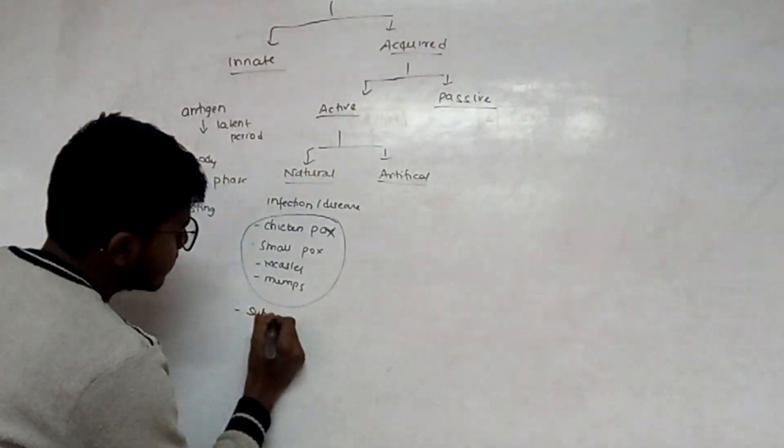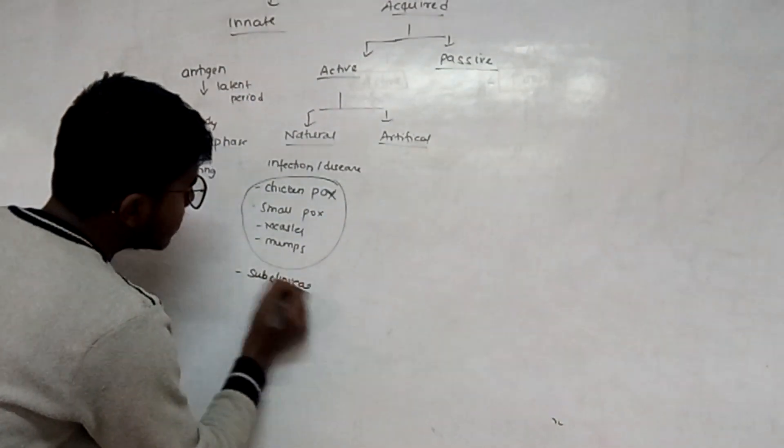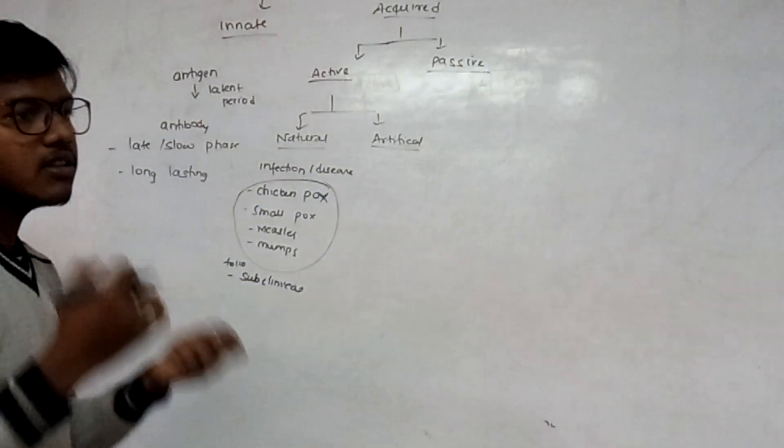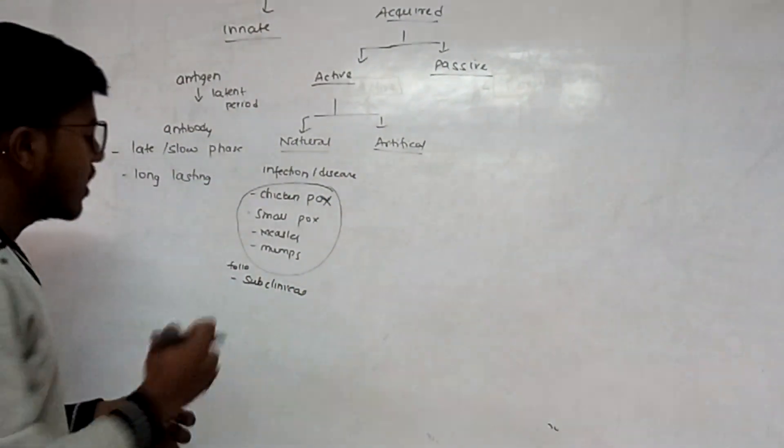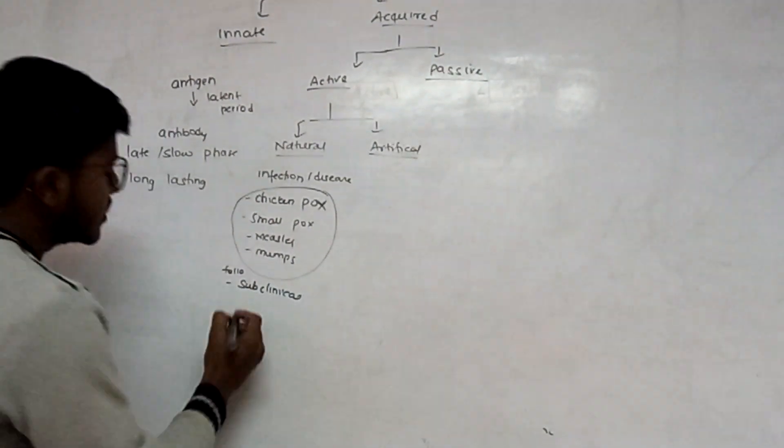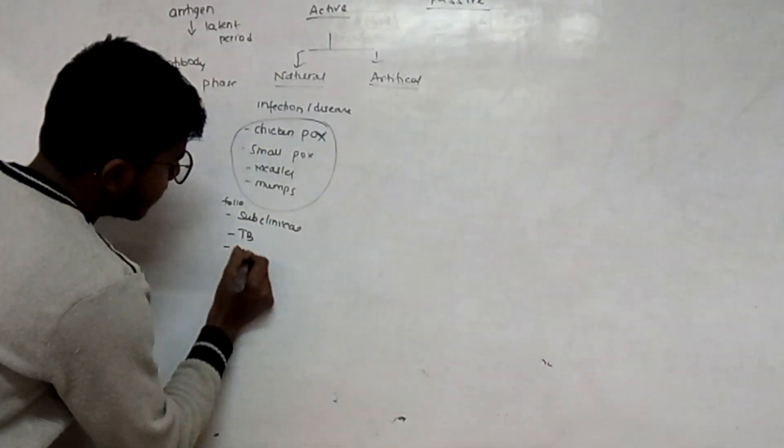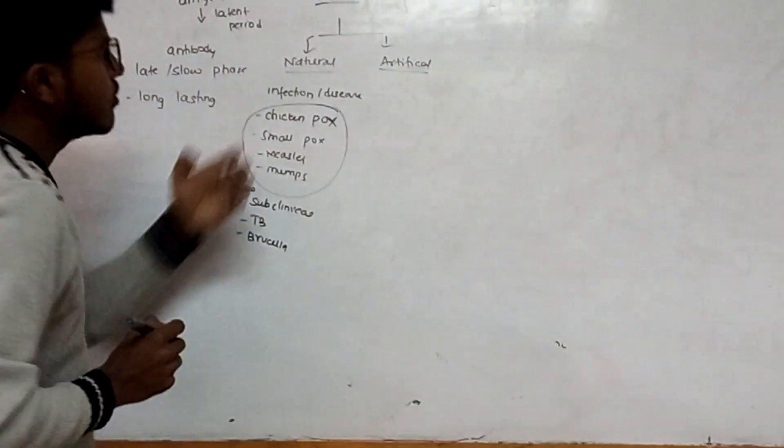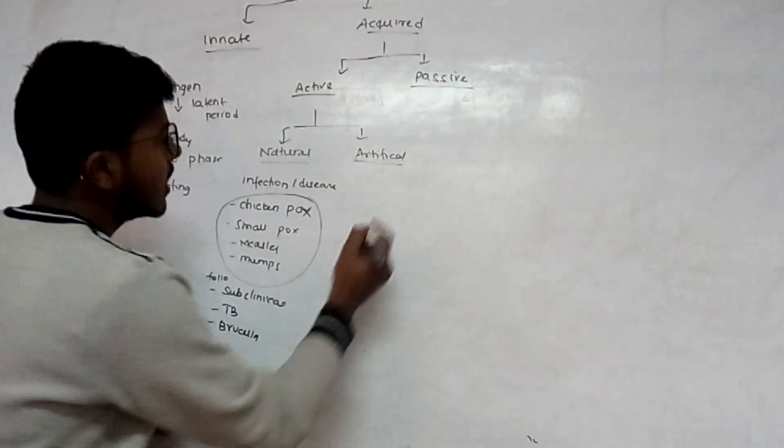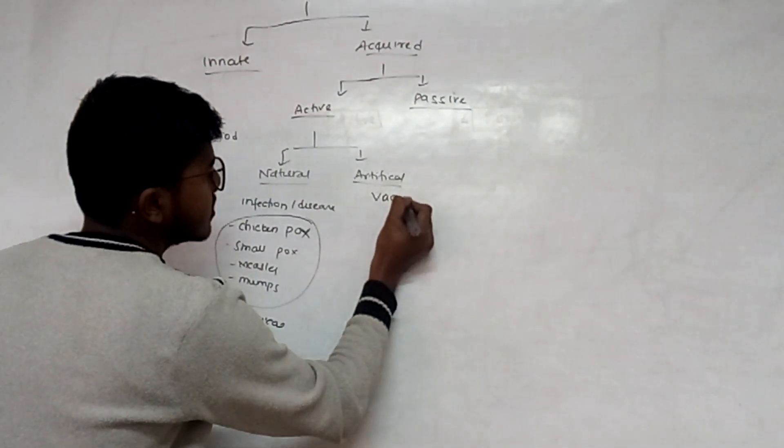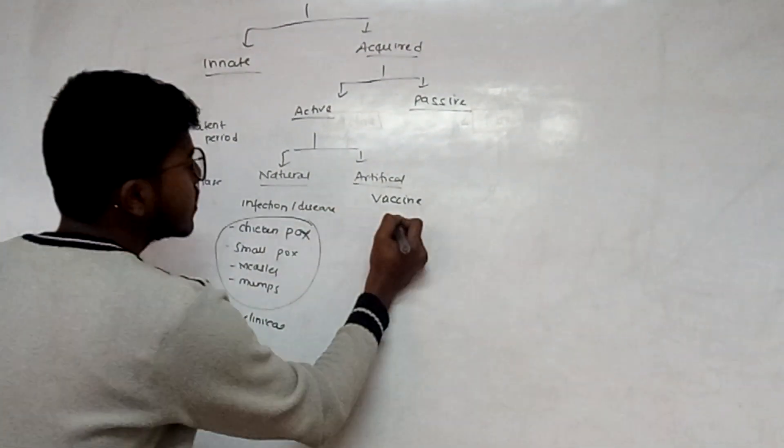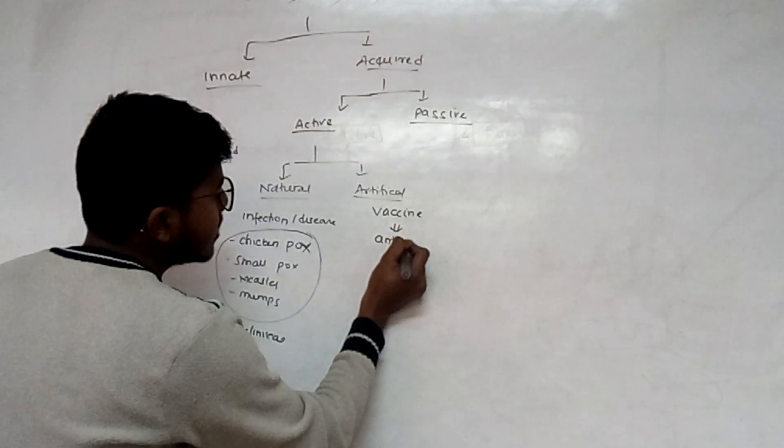Second one is subclinical. Following subclinical infections means we are getting a small dosage of the pathogen, but not in the concentration to cause disease. In this we are also forming antibody. It is in the case of tuberculosis and brucella. Now, artificial - artificially acquired active immunity is through vaccinations or vaccines.